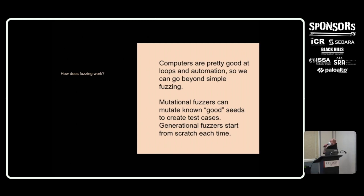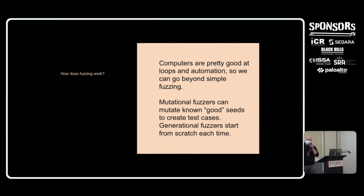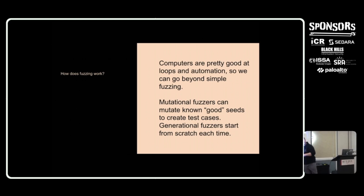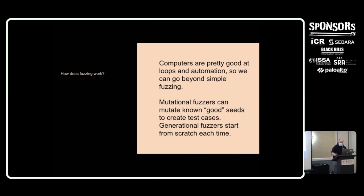Computers are pretty good at looping through things, so we can go beyond simple fuzzing. Mutational fuzzers are interesting because they take a known good state and mutate it. Maybe you have a string that works — it says 'hello world' — and it changes one character at a time, one byte at a time, adding or subtracting characters to generate test cases. You start with a known seed and change one thing at a time. Generational fuzzers generate from scratch every time — 'hello world' runs okay, now 'hello Josh,' now something else entirely. Computers can just generate stuff very quickly and loop through things.